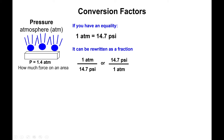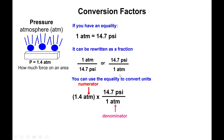If the pressure we have given is 1.4 atmospheres and we're asked to find the PSI, then we start with the 1.4 atmospheres and pick the fraction that has atmospheres on the bottom — specifically the second fraction — to cancel out the atmospheres and leave behind PSI. Multiplying 1.4 by 14.7 will yield a value of 20.6 PSI.